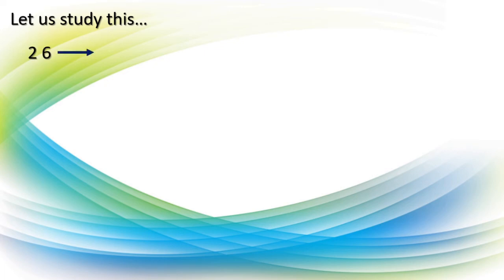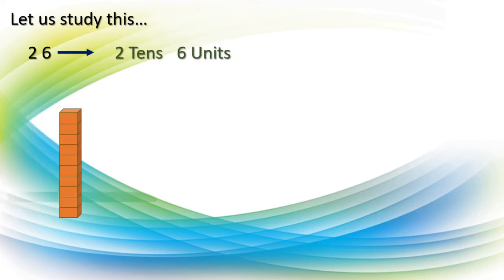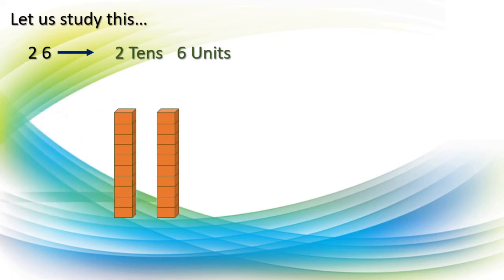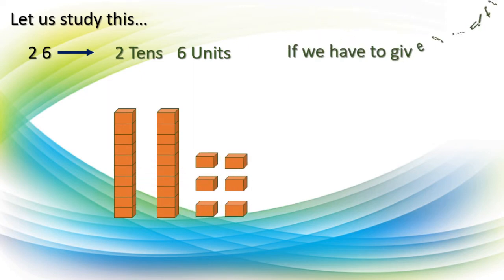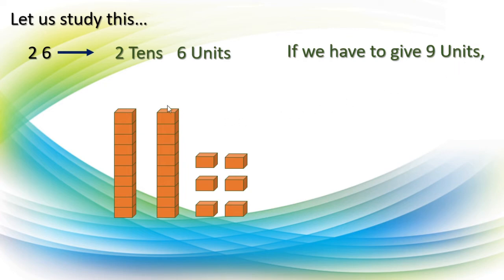Here one more: 26 means 2 tens and 6 units. We can see 1 ten, 2 tens, and 6 units. Now if we have to give 9 units to a friend, what do we have to do? We already have 6 units, and 6 is smaller than 9, so we must untie one ten.